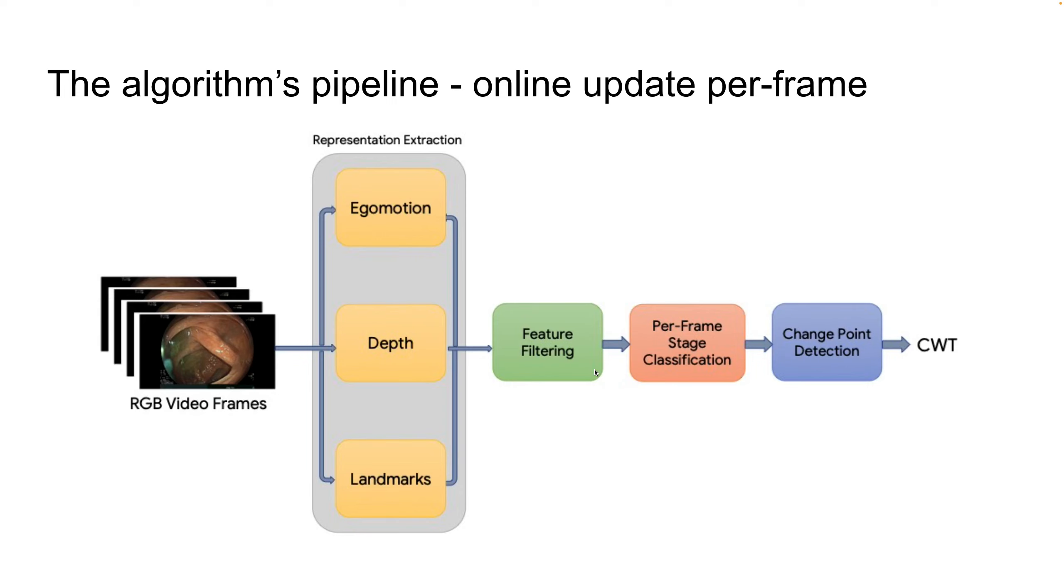Now we're going to dive into the technical details on how the algorithm generates this estimate. The input for the algorithm are just RGB video frames. Each frame is processed one by one, and the algorithm outputs a number when the withdrawal phase actually began, how many frames ago.